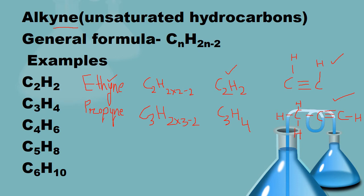Now the valency of carbon is fulfilled: one, two, three, and four for each carbon. So we have the name, molecular formula, and structural formula of ethyne. Shall we do one more? I hope for the remaining ones you will be able to do it yourselves.